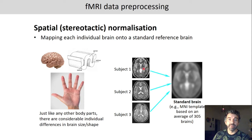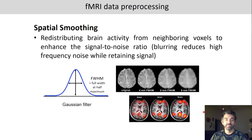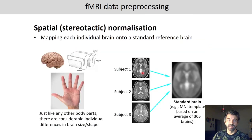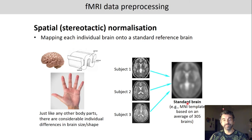What we can do is map — for example, subjects one, two, and three — onto what we call the standard brain, which in this case is a template based on an average of 305 brains. By finding corresponding points in the subject's brain and in the standard brain and then morphing the image accordingly, we get a standardized image for each participant.